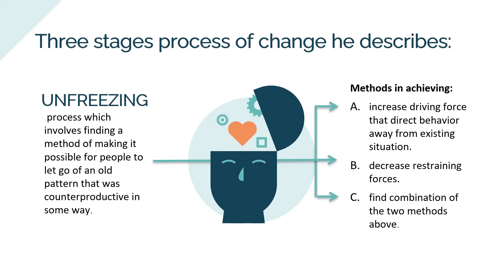The first stage of Kurt Lewin's change theory is unfreezing. It is the process of finding a method of making it possible for people to let go of an old pattern that was counterproductive in some way. Unfreezing is necessary to overcome individual resistance and group conformity. It can be achieved by three methods: first, increase the driving forces that direct behavior away from the existing situation; second, decrease the restraining forces that negatively affect movement from the existing equilibrium; and third, find a combination of the two methods.